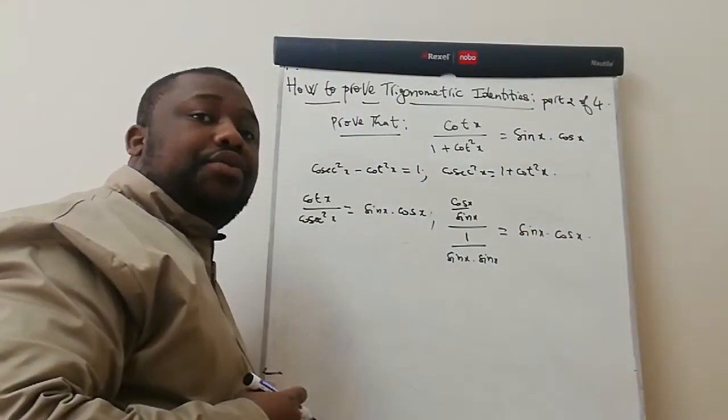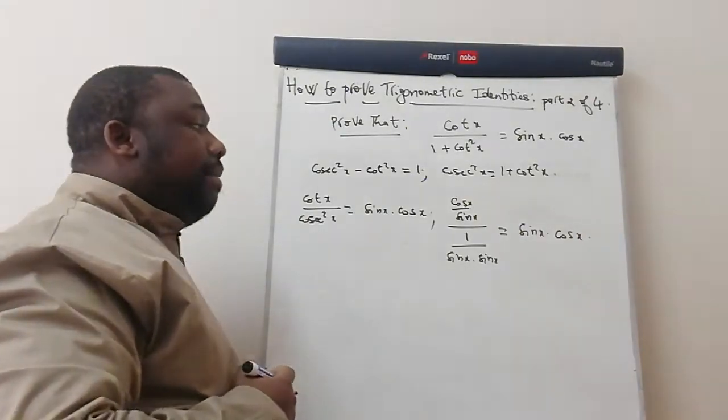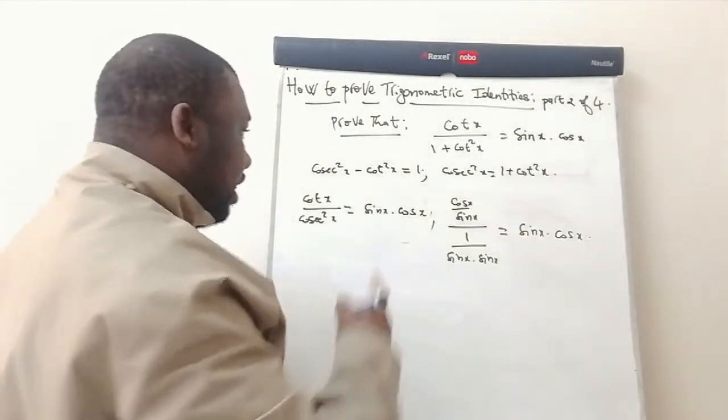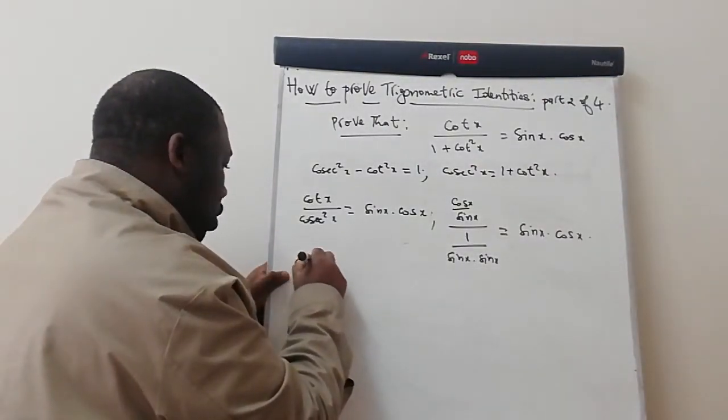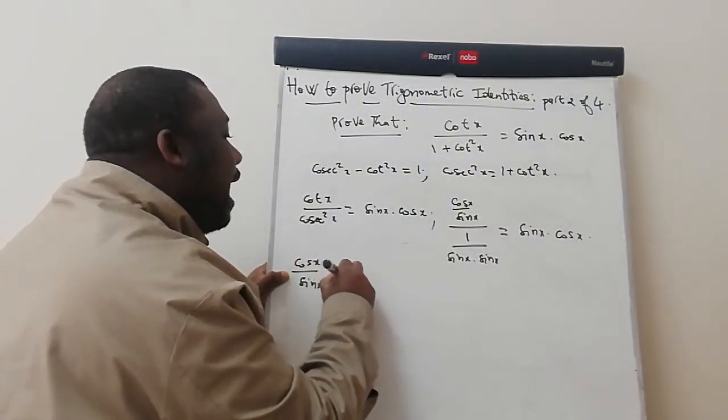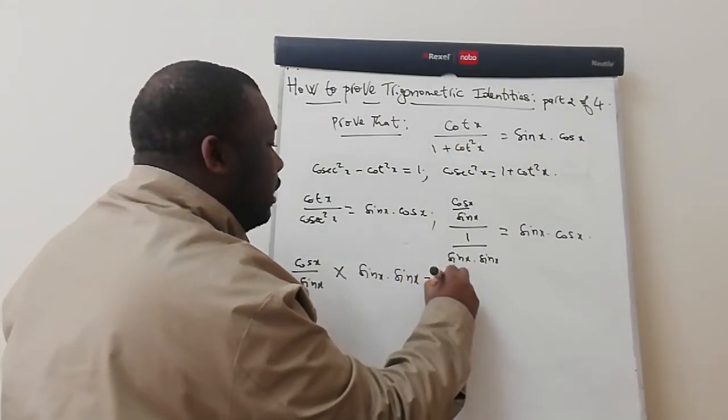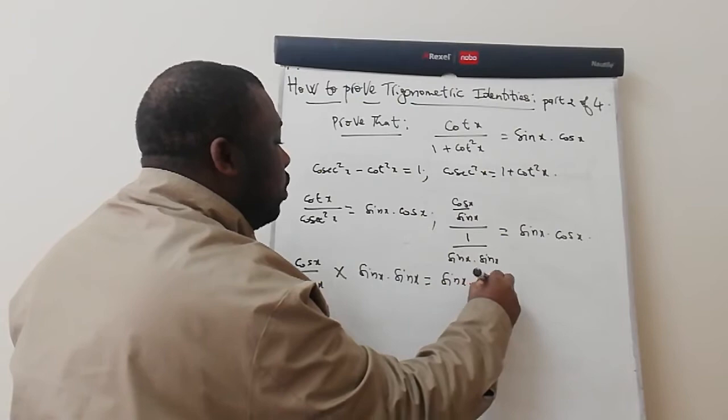From here, we're dividing two fractions. What do you do? You multiply the first fraction times the inverse of the second fraction. So we actually get cos x over sin x times sin x times sin x. This must be equal to sin x times cos x.